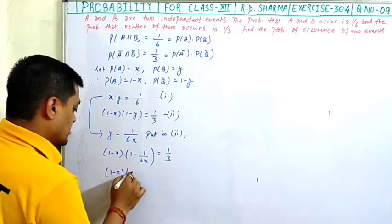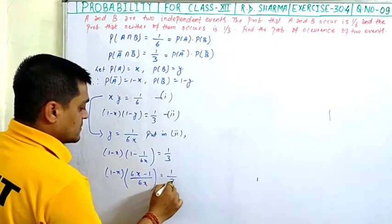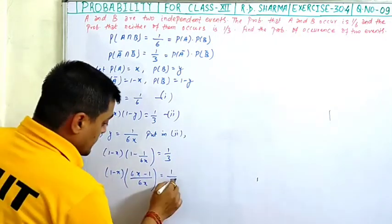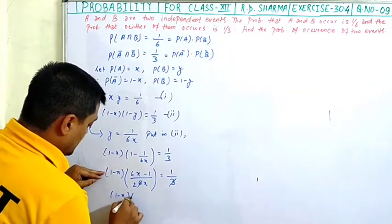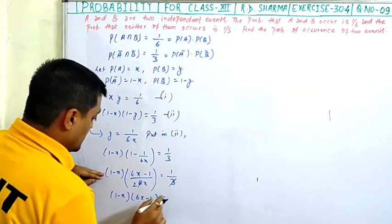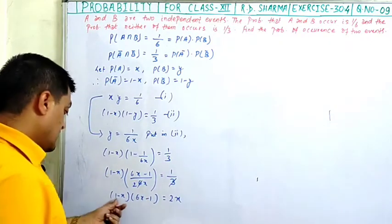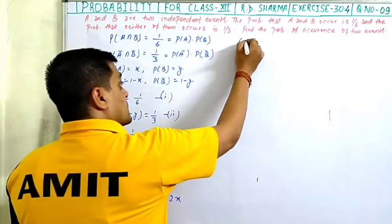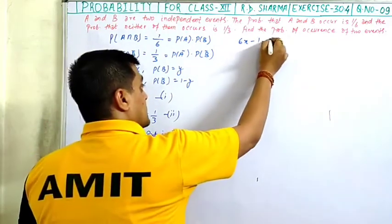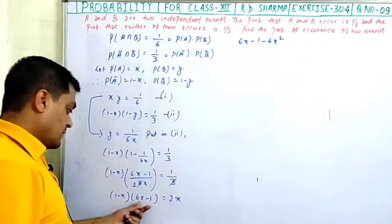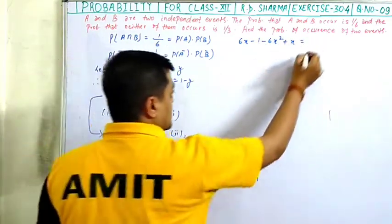From equation 1, xy = 1 upon 6, so y = 1 upon 6x. Substituting into equation 2: 1 minus x into 6x minus 1, whole upon 6x, equals 1 upon 3. Cross-multiplying and cancelling the factor of 2: 1 minus x into 6x minus 1 equals 2x. Expanding: 6x minus 1 minus 6x squared plus x equals 2x.